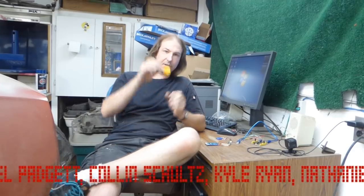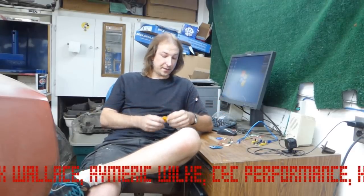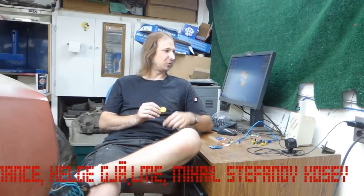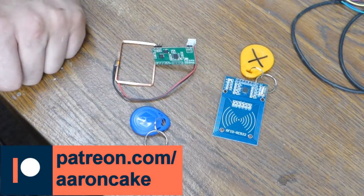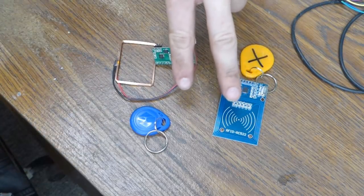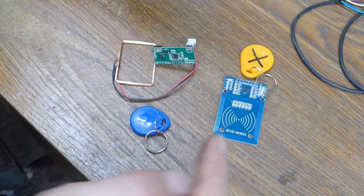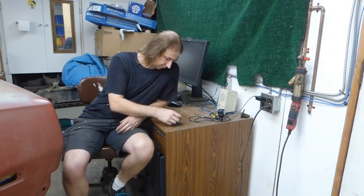RFIDs are little chips that when stimulated by an RFID reader spit back some information. Depending on the chip, that information could just be an ID number or up to about four or eight kilobytes of data. They have a very short range, only a few centimeters. There are two common types in use today: 13.56 megahertz and 125 kilohertz. The main difference is that the 13.56 megahertz tags hold more information and can be easily programmed, where most 125 kilohertz tags just spit back an ID.